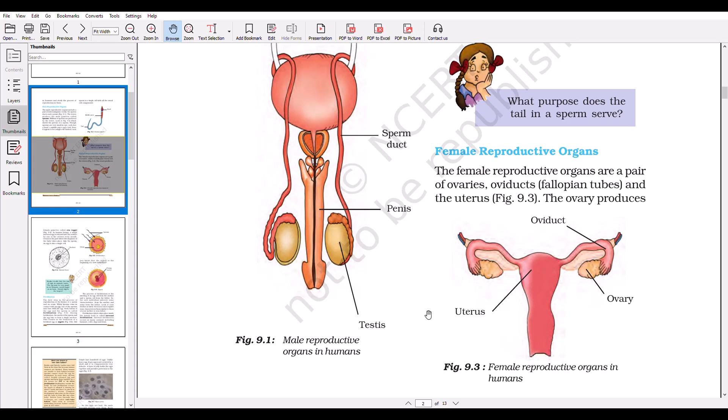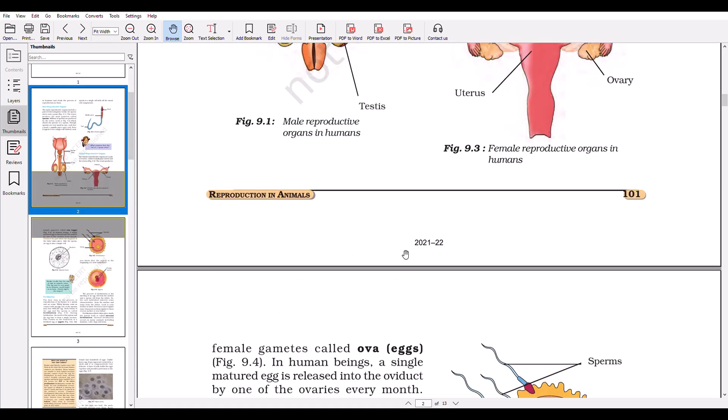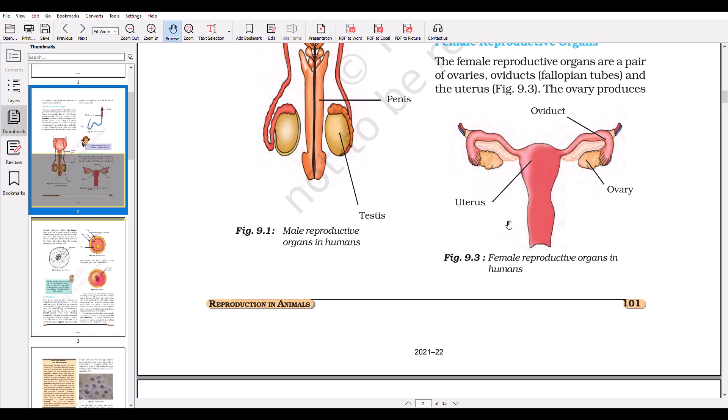The female reproductive organs are a pair of ovaries, oviducts or fallopian tubes, and the uterus. The ovary produces female gametes called ova or eggs. This is the uterus, this one is the oviduct, and here lies the ovary. There are two ovaries, left and right, and there are two oviducts.